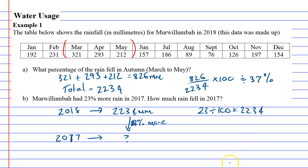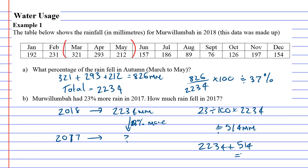23% of 2234 comes out to approximately 514 millimeters. So 2017 had 514 millimeters more than 2018. Adding that to the 2018 total: 514 plus 2234 gives approximately 2748 millimeters of rainfall in 2017.